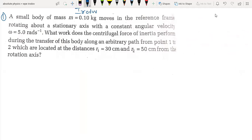A small body of mass 0.1 kg moves in a reference frame rotating about a stationary axis with a constant angular velocity. A constant omega that is given 5.0 rad/s.